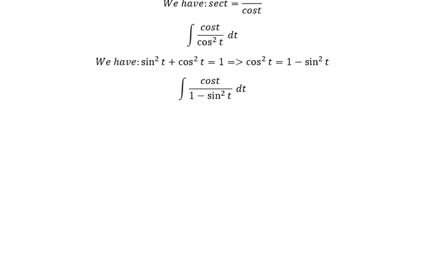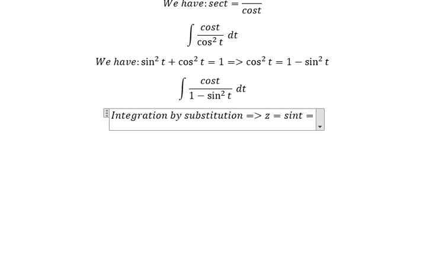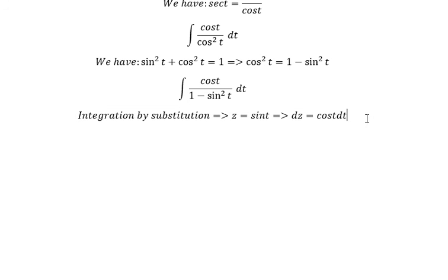Now we can use integration by substitution. So we put z equal to sine t, dz equal to cosine t dt. So we have z to the power of 2 cosine t dt. We change for dz.